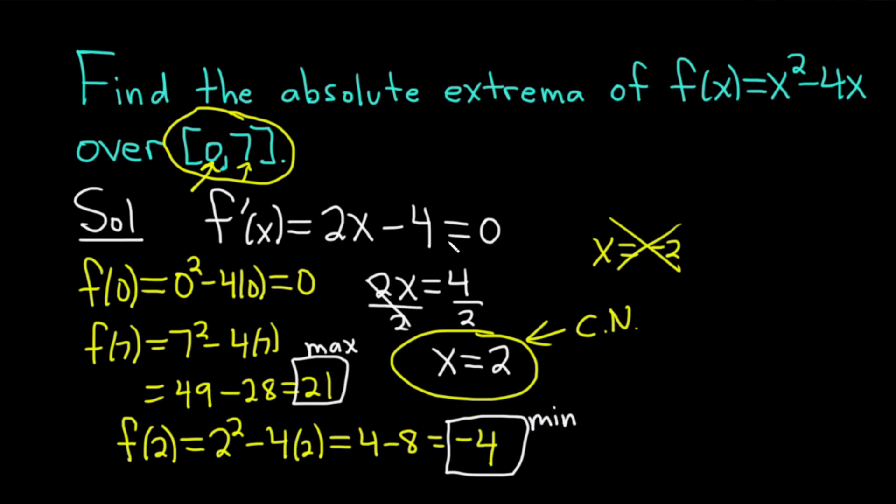So recap. Whenever you're looking for the absolute extrema of a function, find the critical numbers, but make sure that those numbers are between the interval that's given. Again, in this particular case, there was no issues. We just got 2. But if we had gotten -2, game over, right? You throw that one away. Then you take all your critical numbers and your endpoints, so the numbers they give you in the problem, in this case 0 and 7, and you plug them back into the original function. You want to go back to what's given. The biggest number is the max. The smallest is the min.